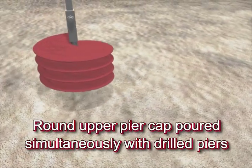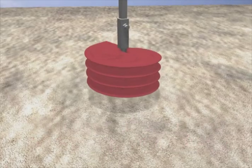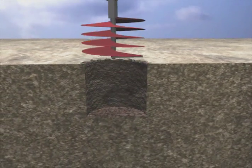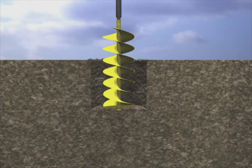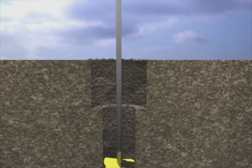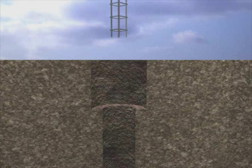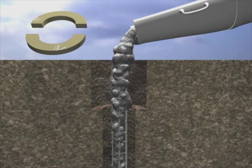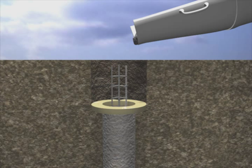Round upper pier caps poured simultaneously with drilled piers will eliminate a second pour. This animation shows a red auger that could be approximately six foot in diameter for the upper cap and the second yellow auger about four foot in diameter as the main supporting shaft. Rebar is placed, the concrete is poured to the top of the smaller diameter, then for a short pause.